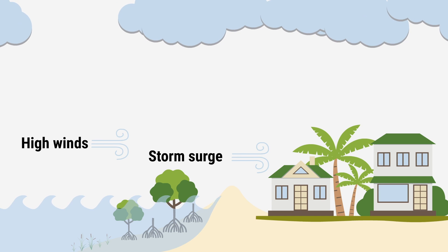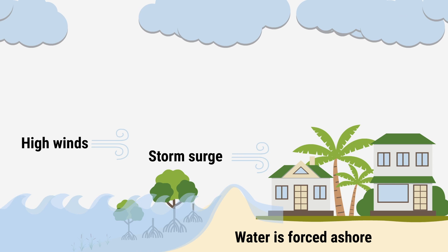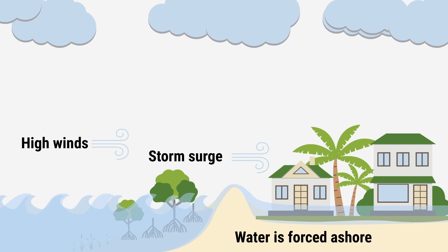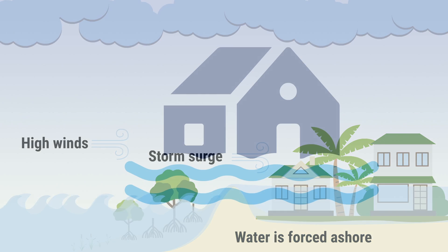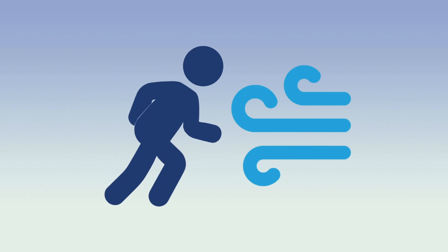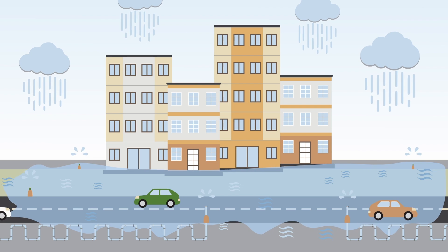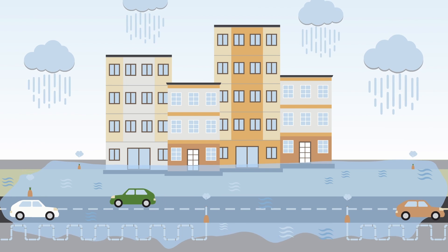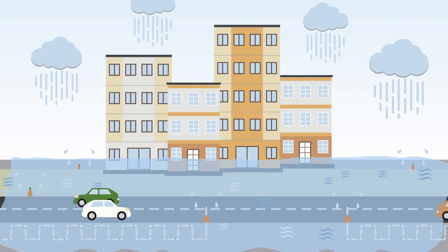Combined with normal high tides, storm surge can create water levels of more than 12 feet on Florida's Atlantic coast, crashing on shore and inundating coastal areas. Among other factors, the height of the water level depends on how strong the wind is blowing, how fast the storm is moving, and where it makes landfall. Storm surge also makes inland flooding worse by clogging drainage systems already inundated by a storm's rainfall.